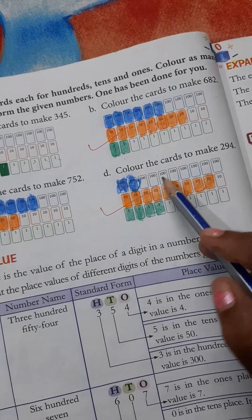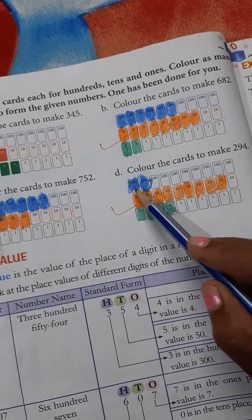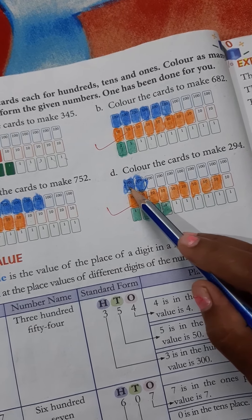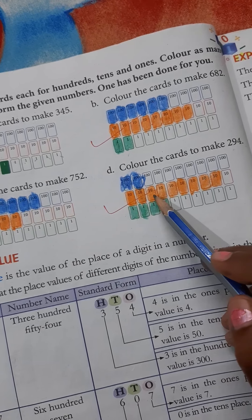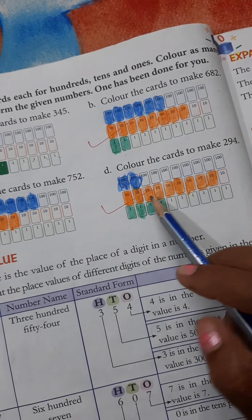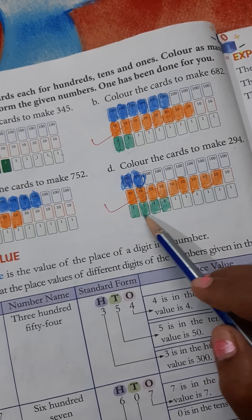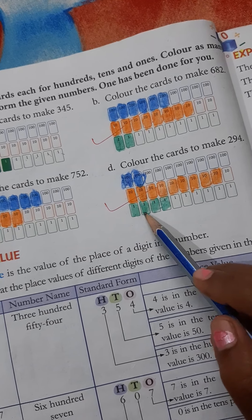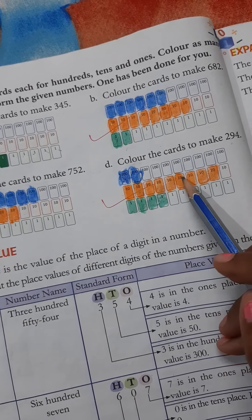Number D, make 294. 1, 2. 2 cards with blue color mean 200. Then, 10 cards. 1, 2, 3, 4, 5, 6, 7, 8, 9. 9 cards color with orange. Then, last 4 cards with green color. 1, 2, 3, 4.